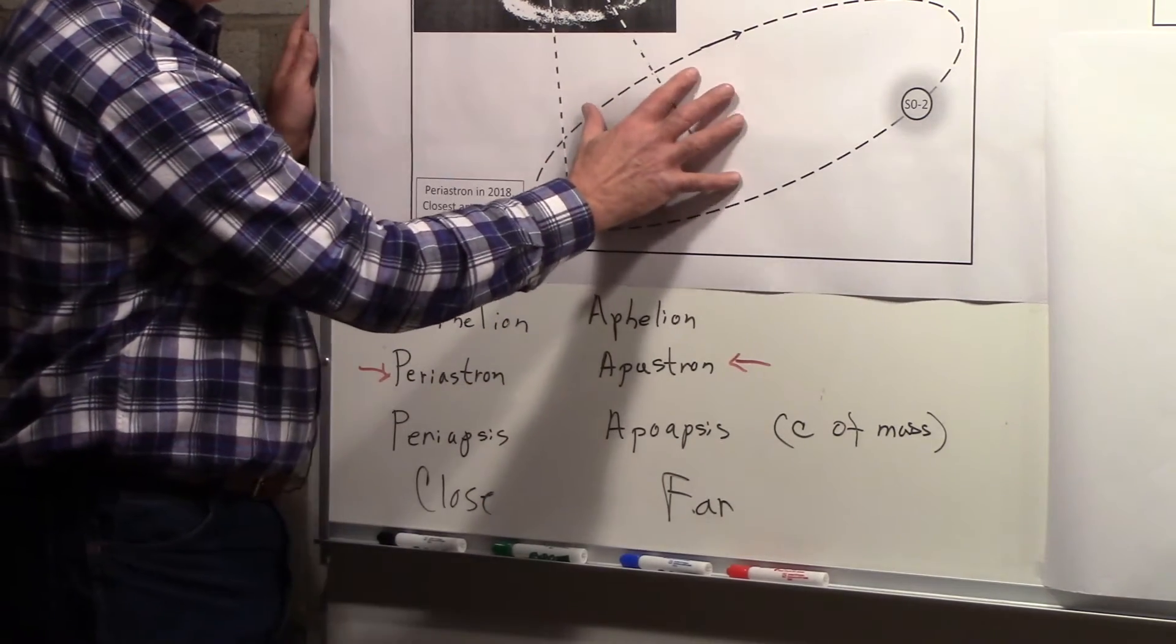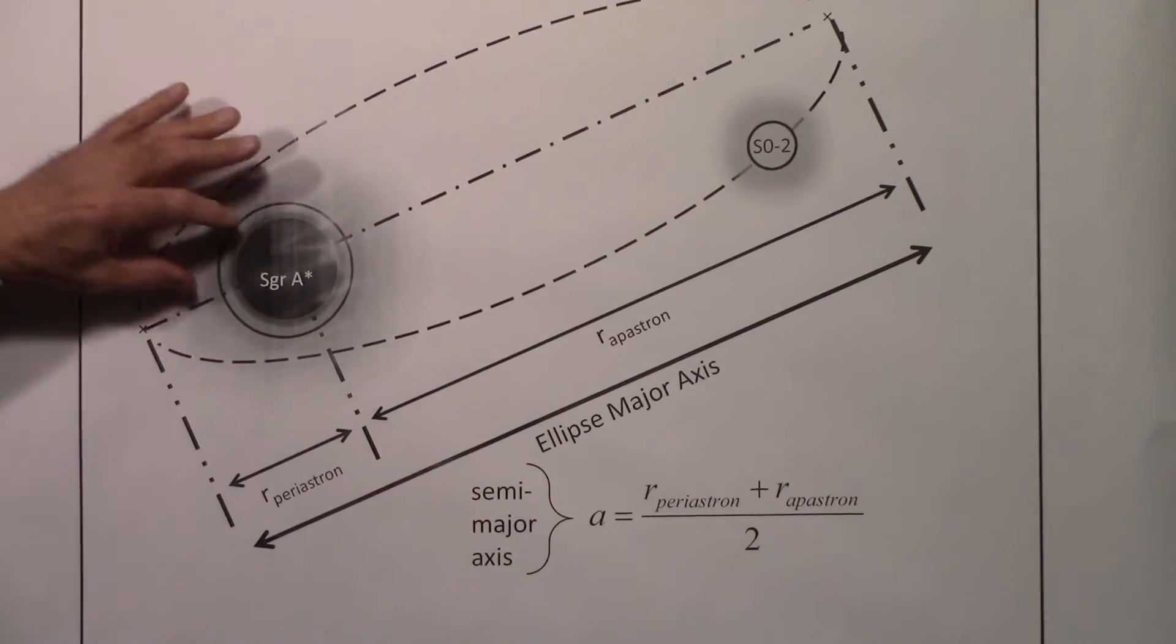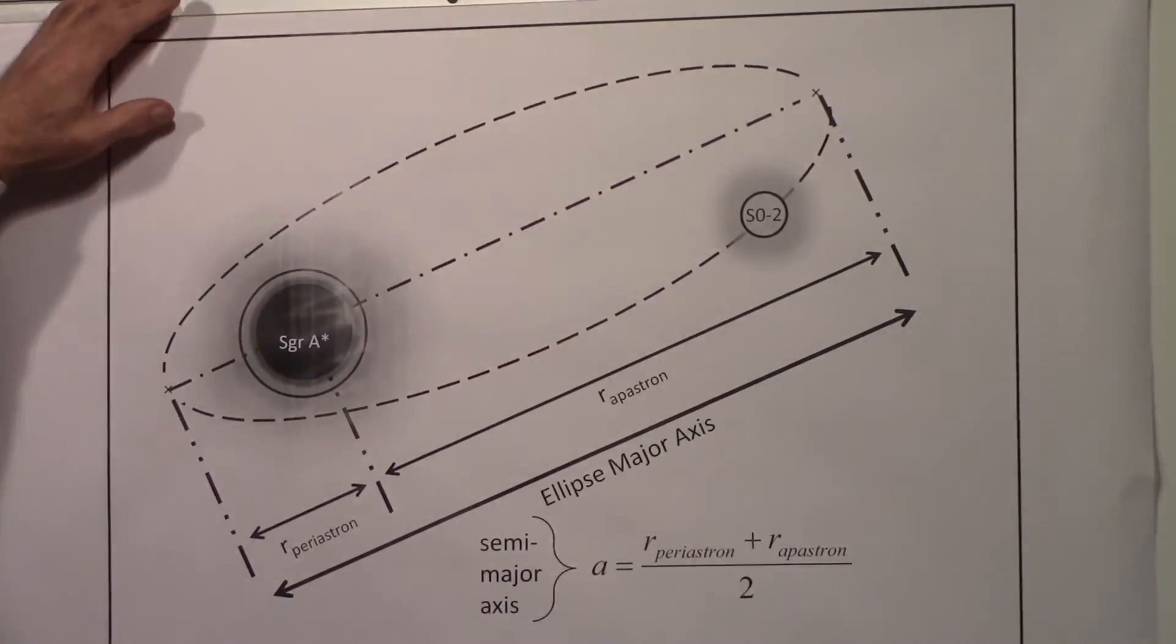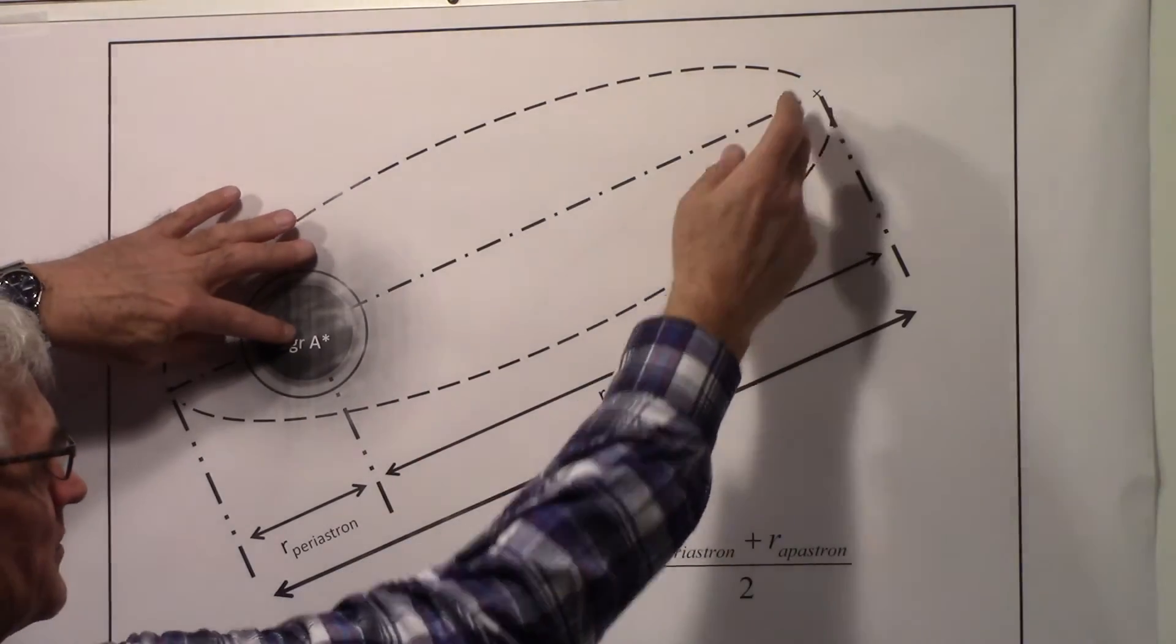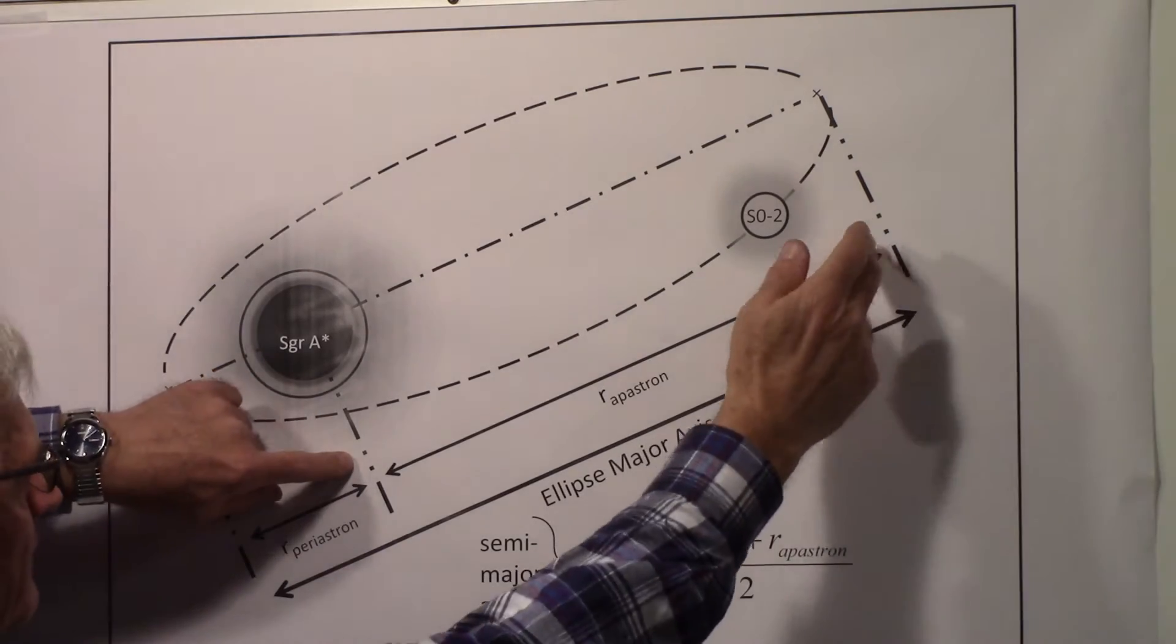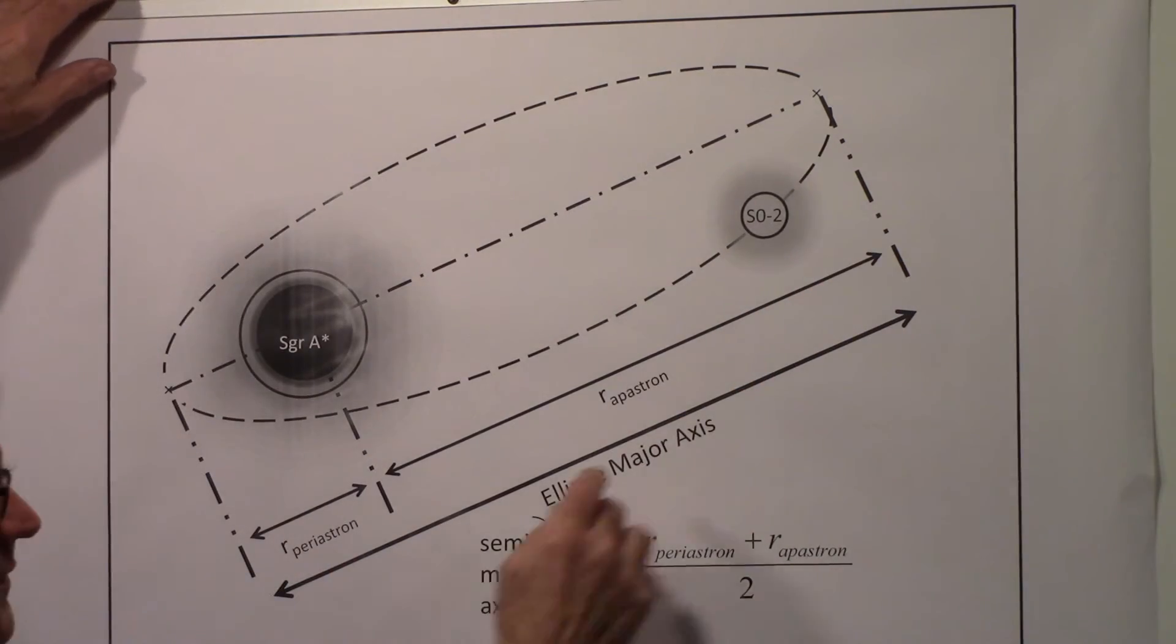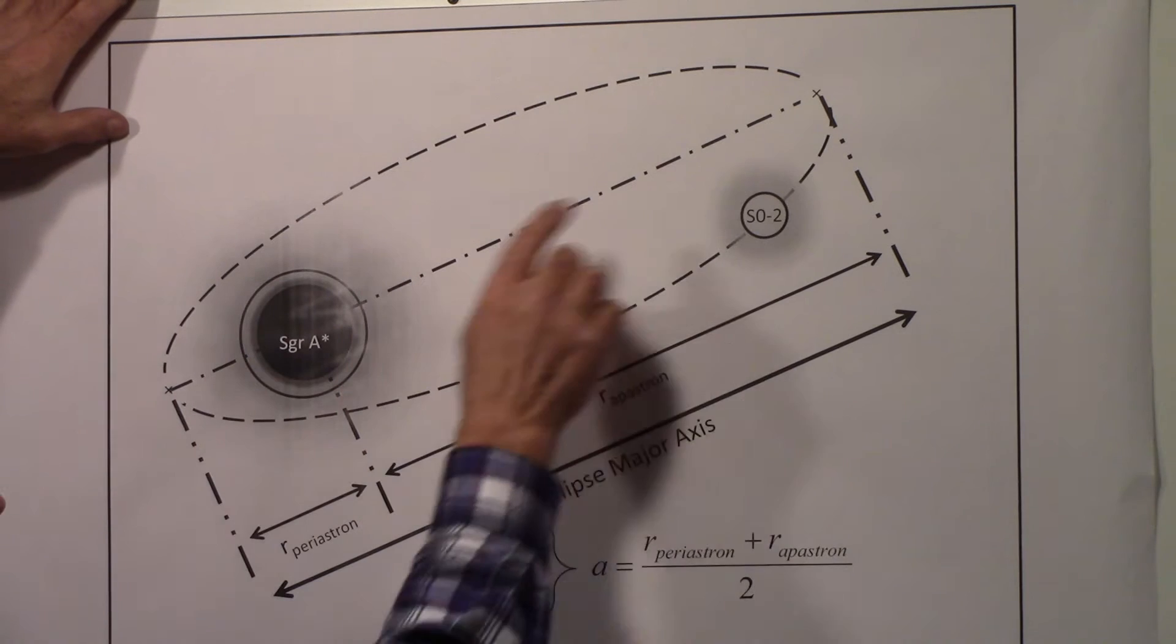Let's take a closer look at this region. Here it is again: Sagittarius A* with S02 in orbit around it. I'm calling out those distances we just talked about - the closest one, periastron, and the more distant point, apastron. The ellipse major axis, the elliptical orbit that S02 is in - here's the major axis from one end to the other.